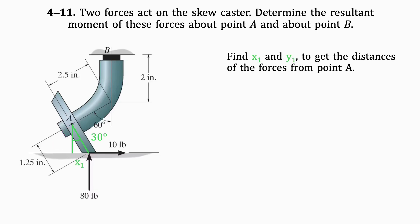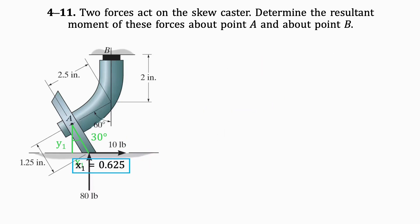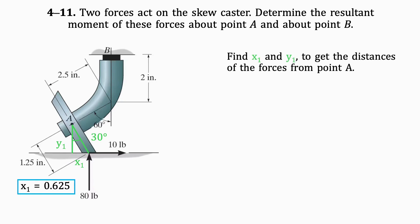Let's find x1 first. x1 is 1.25 times sine 30, which results in 0.625 inches. Next, we'll find y1. y1 is 1.25 times cosine 30, which results in 1.083 inches.